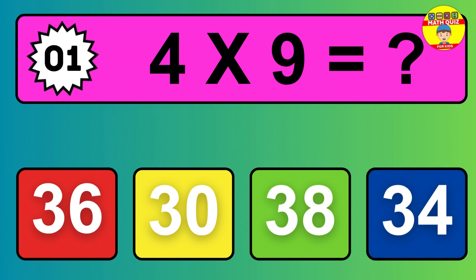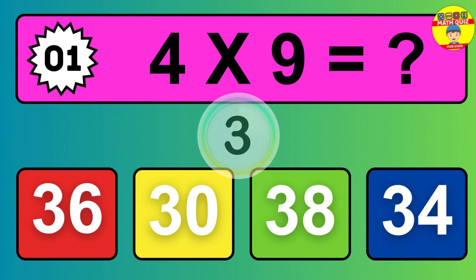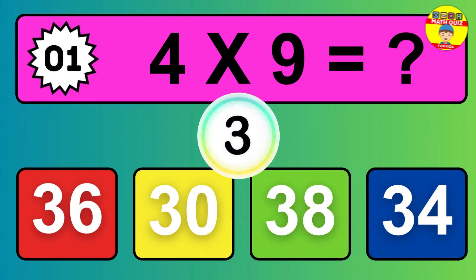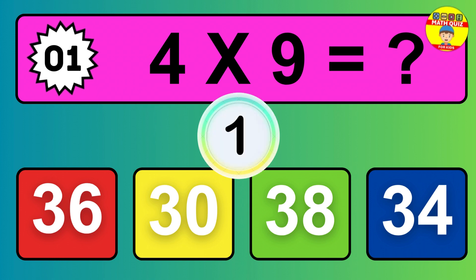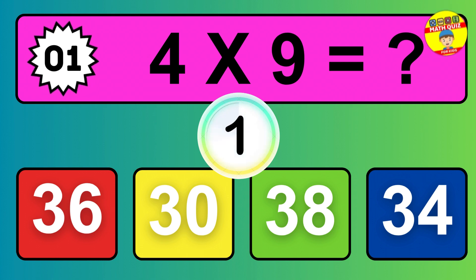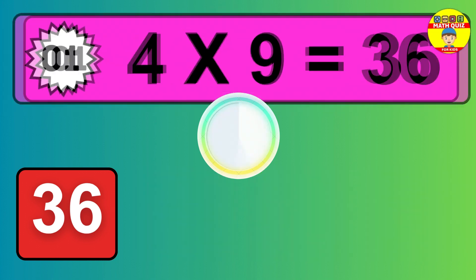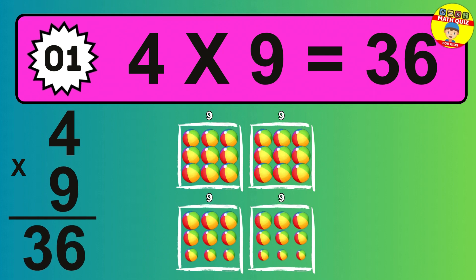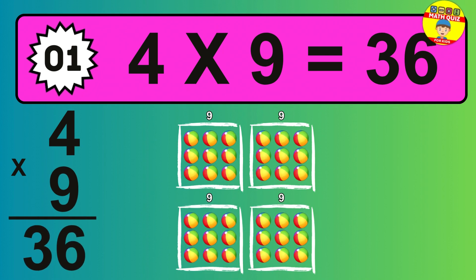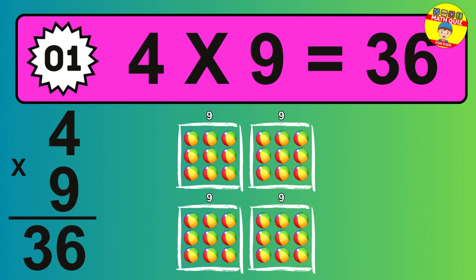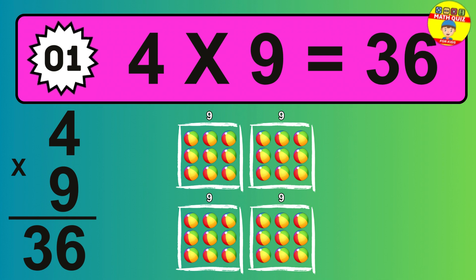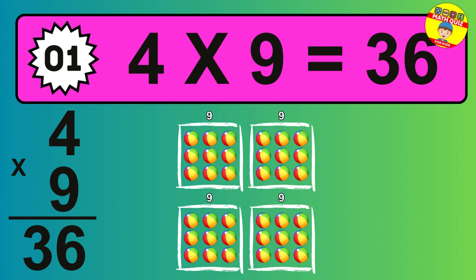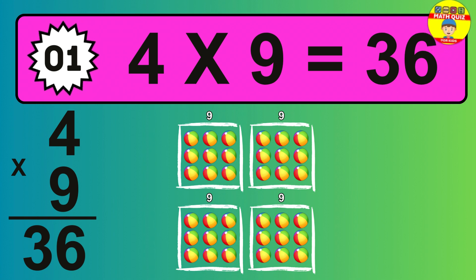Question 1. 4 times 9 equals what? The answer is 4 times 9 is 36. To calculate, we have 4 groups with 9 balls each one. So how many balls do we have? 36 balls.